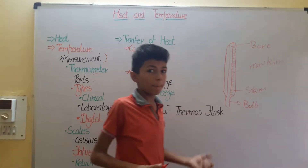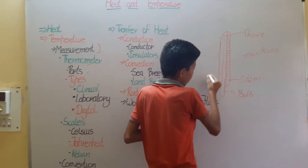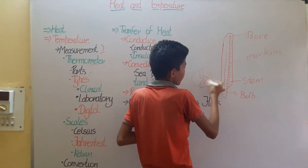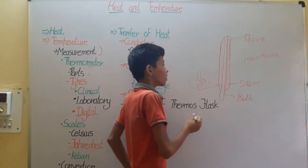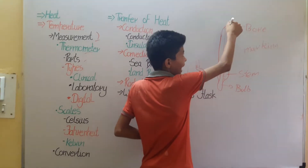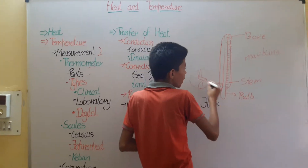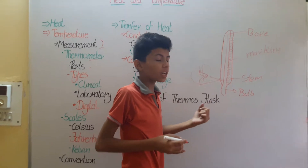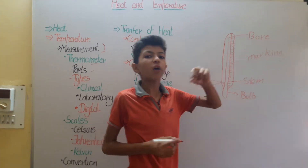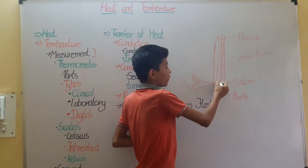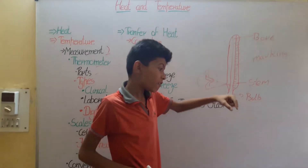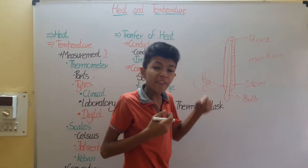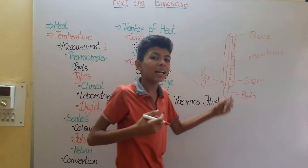In some thermometers, there is a constriction in the bore which allows less mercury to flow back down to the bulb. This means we can read the temperature after taking it out from the substance. But a thermometer without this constriction — the mercury or alcohol would fall back down and we cannot get an accurate reading after removing it from the substance.